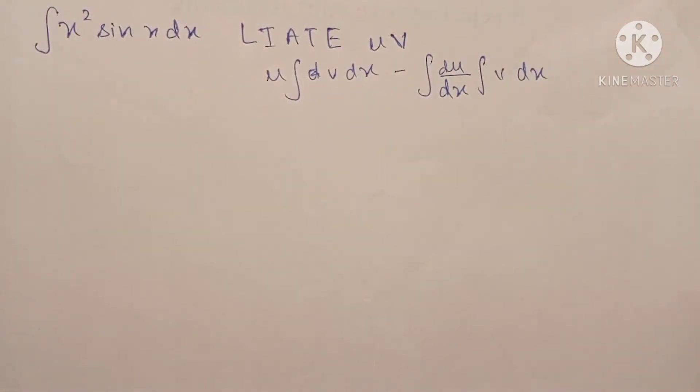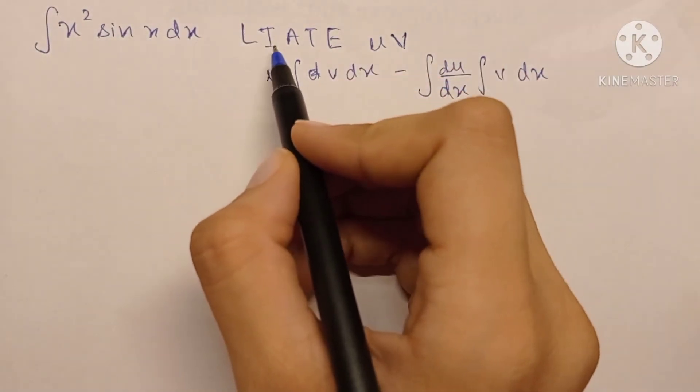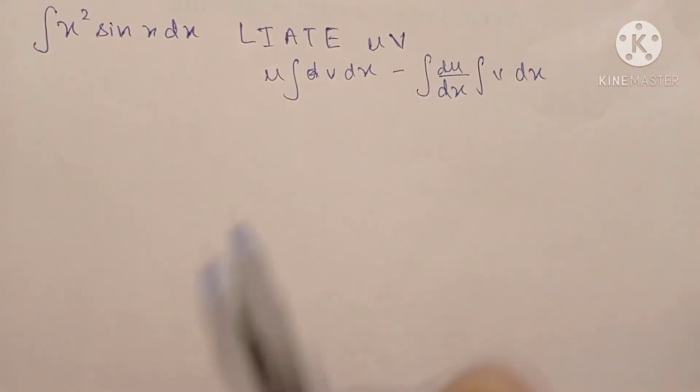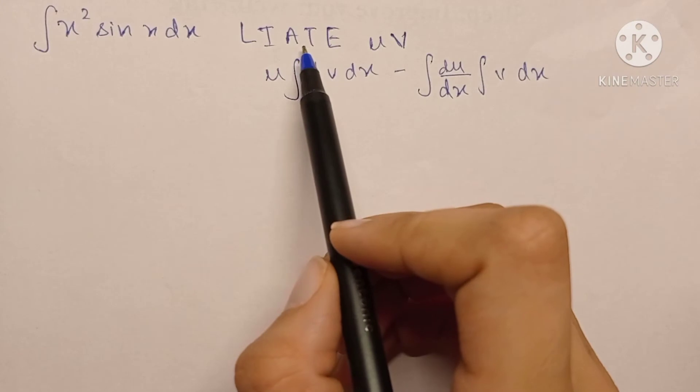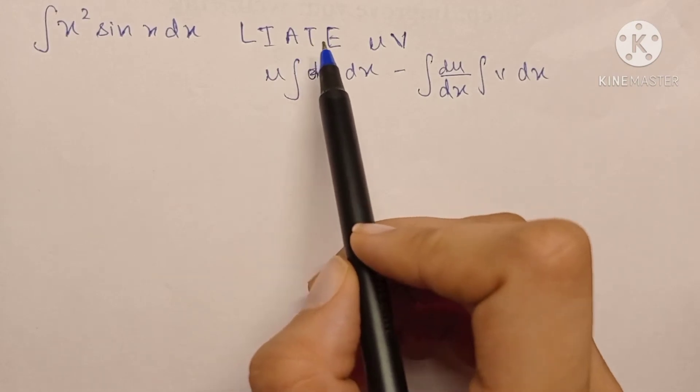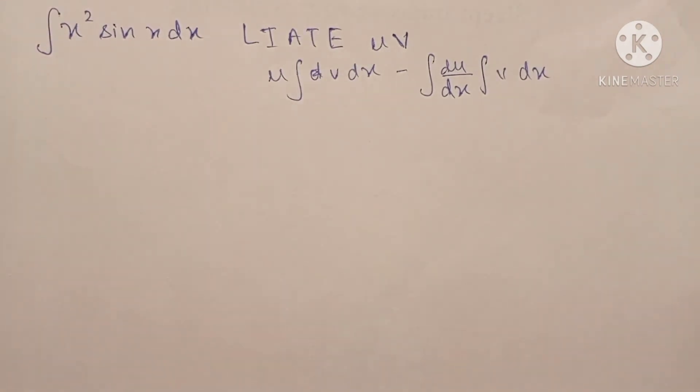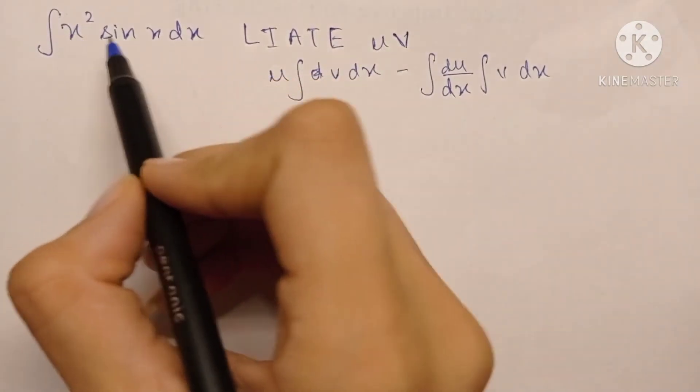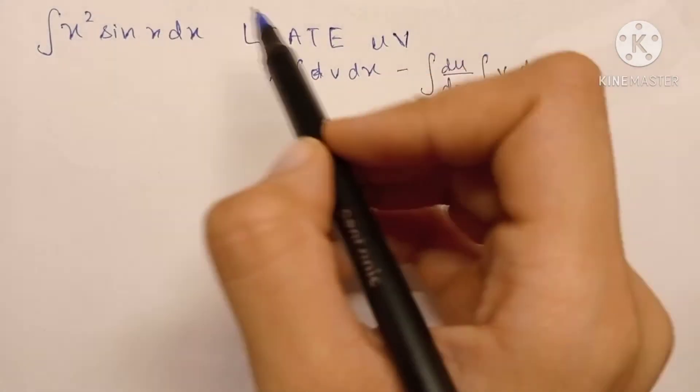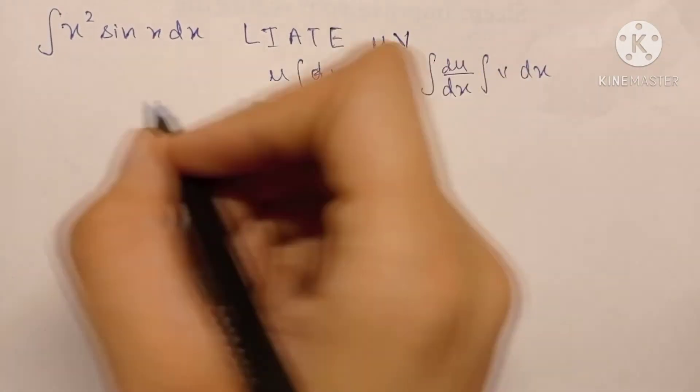Trigonometric comes before exponential. So here we have algebraic and trigonometric terms. Since algebraic comes before trigonometric, we will keep the algebraic term as u and the trigonometric term as v.